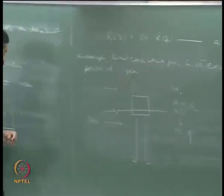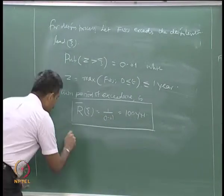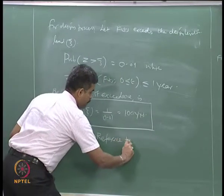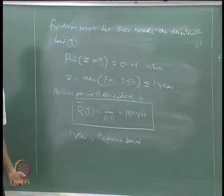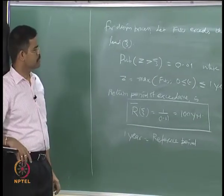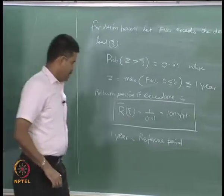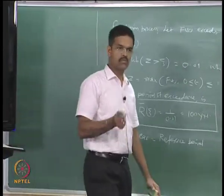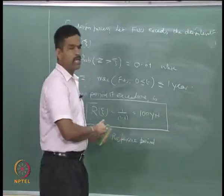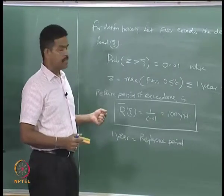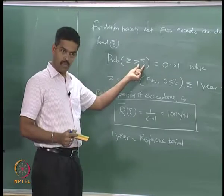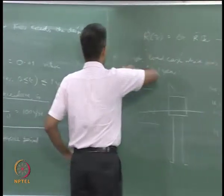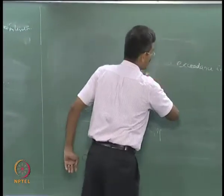This is a typical return period for design waves in offshore structures. Physically, the load which causes the design value on your system has a probability of exceedance of 10 to the power minus 2 in a given period of 1 year. Then the return period is 100 years. This 1-year period used in the calculation is called the reference period. Sometimes in literature, people also express return period in terms of risk associated with the loading — that is another way to look at return period of exceedance.